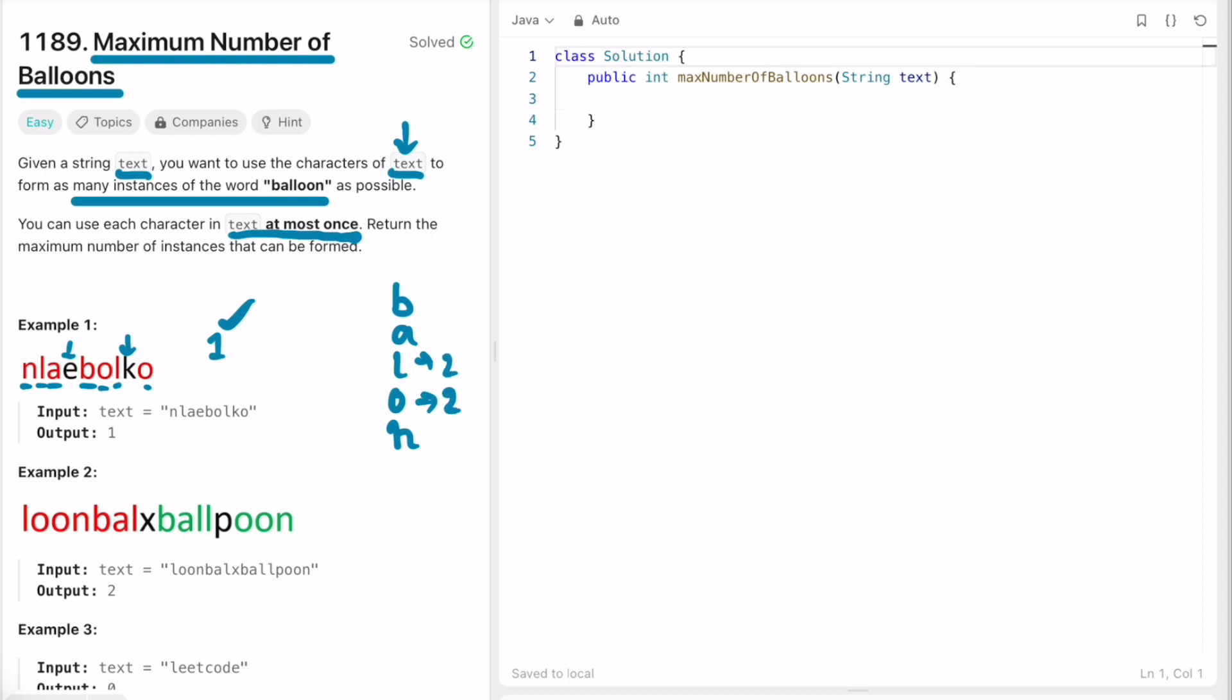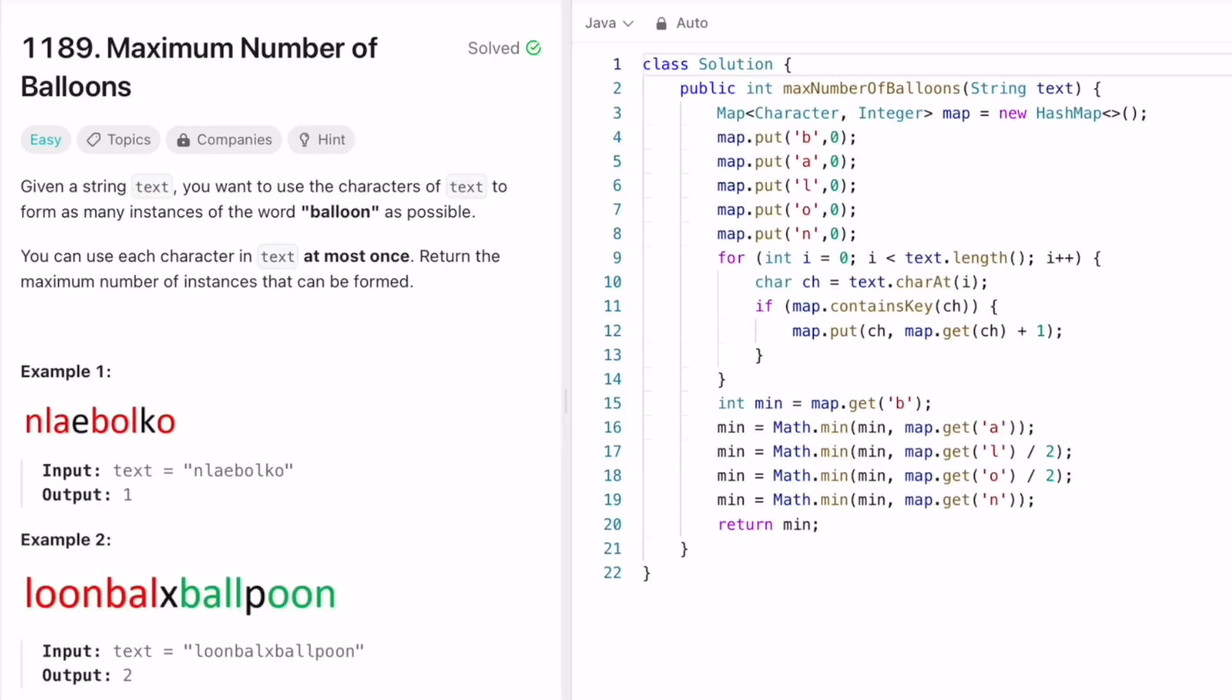The characters used to form balloon are B, A, L, O, and N. L you're using twice and O you're using twice. So let's see how we can solve this question using code. I've declared a hash map and I initialize the characters and initially I put the count as zero for these characters: B, A, L, O, and N.